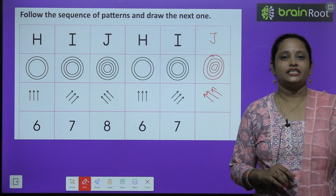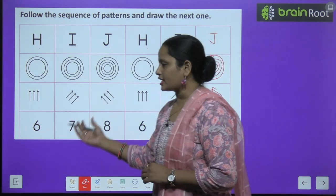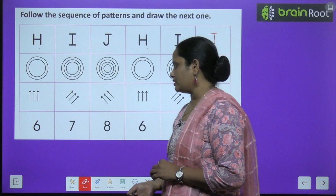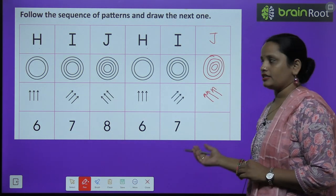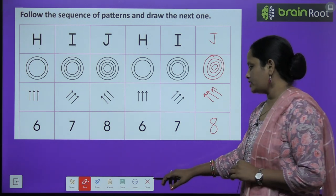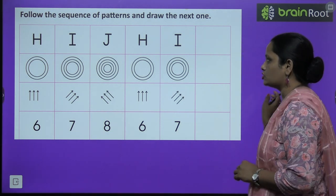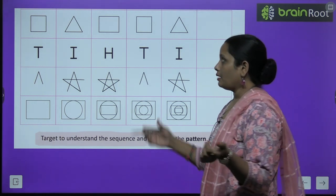Clear children? So draw it neatly using your scale. Next is six, seven, eight, six, seven, eight. Clear?